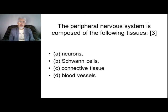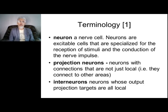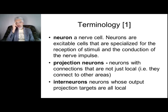The peripheral nervous system consists of different types of cells: neurons, Schwann cells, connective tissues, and blood vessels. Now let's discuss terminology and definitions in neuroscience. First, neurons — what does it mean? Neurons are excitable cells specialized for the reception of stimuli and conduction of nerve impulses.